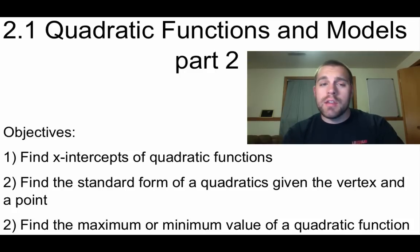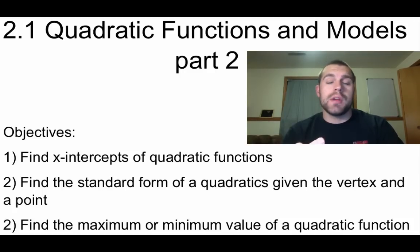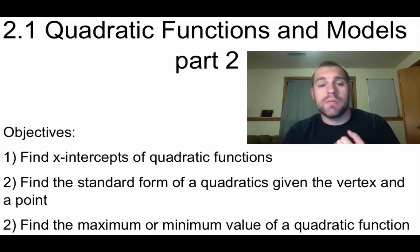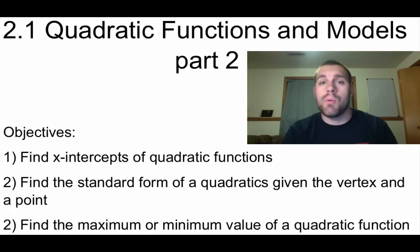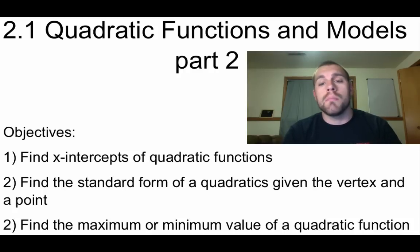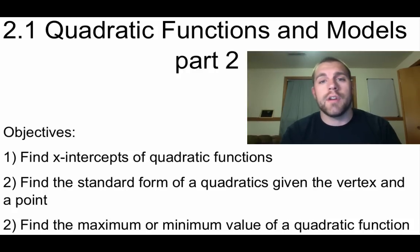Hey guys, Mr. Bakkerberg here. This is part two of lesson 2.1. We've got three objectives. We are going to find x-intercepts of quadratic functions. We're going to write out the standard form of a quadratic function given the vertex and another point on the graph. And then we're also going to find maximum or minimum values of a quadratic function.